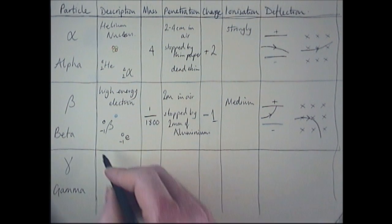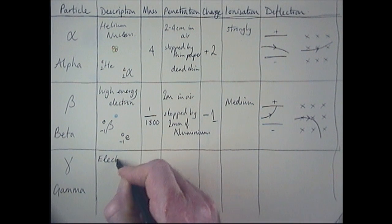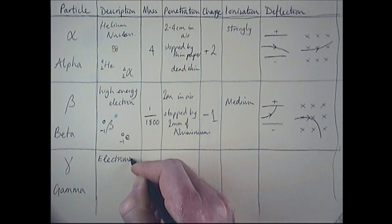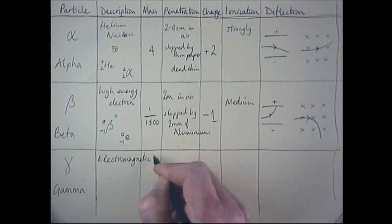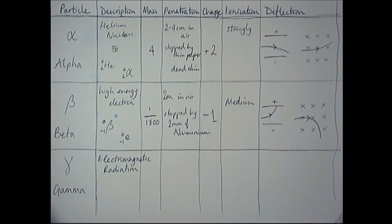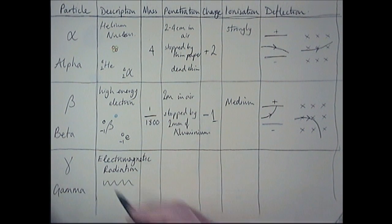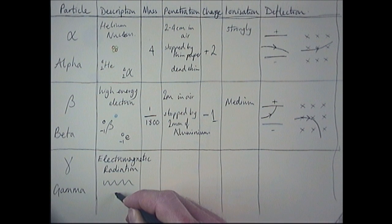So gamma radiation, what is it? Well, it is electromagnetic radiation. It's the highest energy electromagnetic radiation with very low wavelength, very high frequency. So it is actually a wave. If we could see it, it would be like a little high frequency wave. And we can use it in an equation occasionally. If we wanted to give it a notation, it would be zero, zero, and a little gamma symbol.